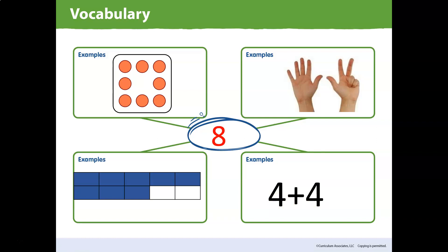So you're going to go ahead and finish this, and then you can do page 110, the next page, where you are putting eight on the 10-frame and putting it around the circle. You can find different combinations — different ways to make eight. So go ahead and have fun learning and finishing your examples of the number eight. Bye for now.